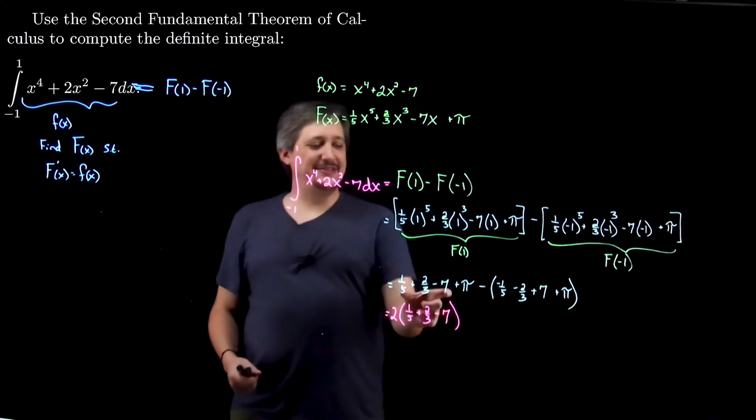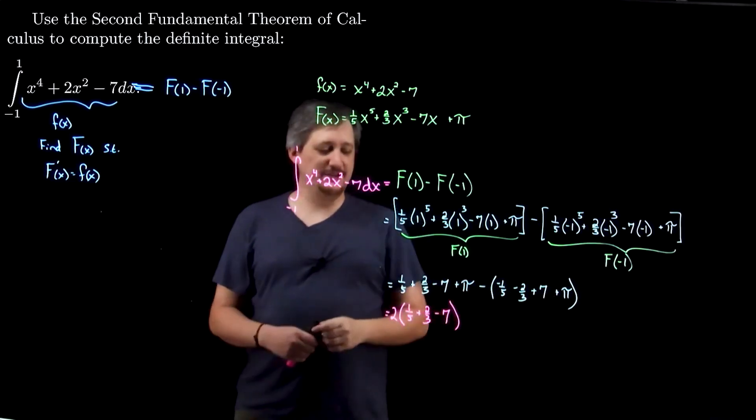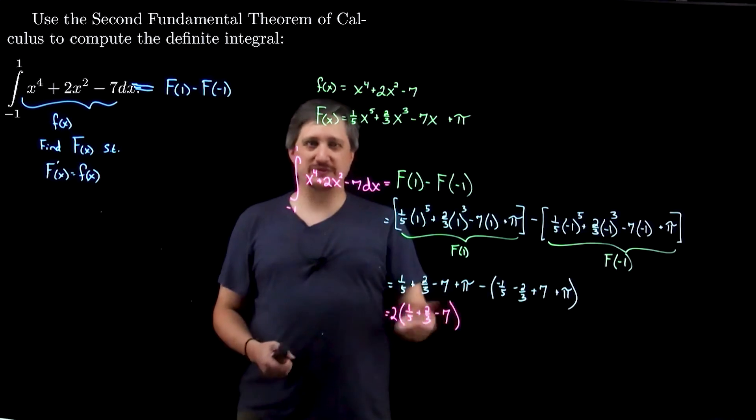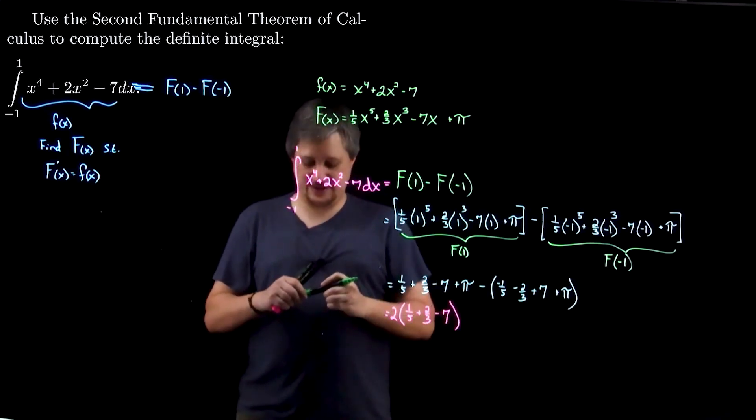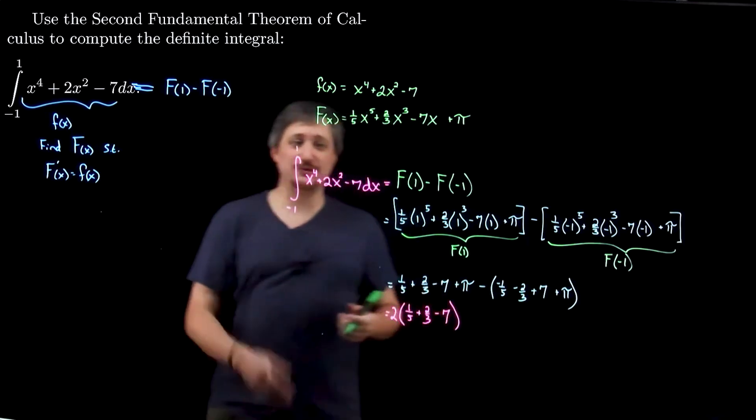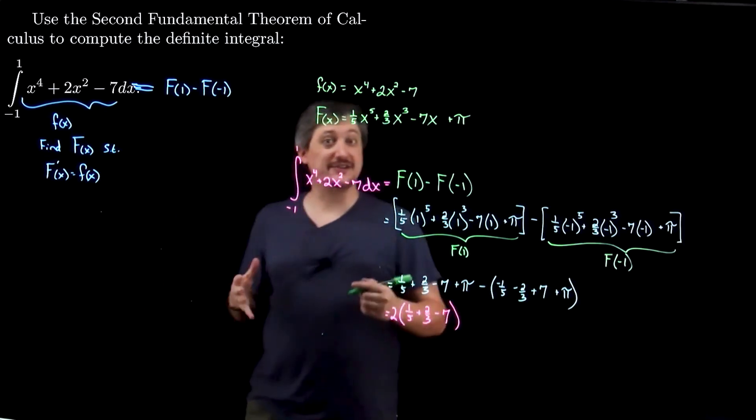But, I noticed that this thing and this thing after I distribute the negative, they gave me the same thing. I got 2 of them. And this is an observation that only works because there's something very special about this integrand. It does not happen in general.